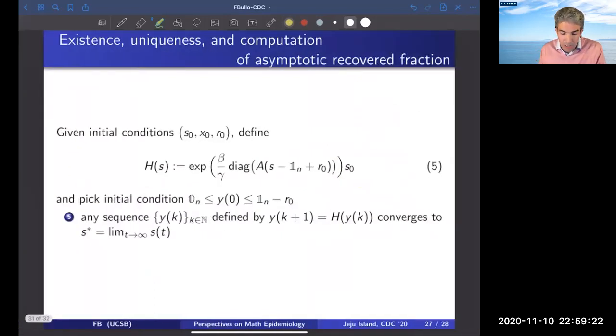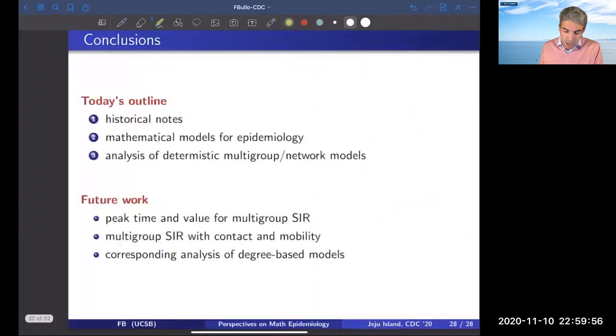Finally, we have been able to also provide an algorithm to compute the asymptotic recovered fraction. You know, what I was depicting with the symbol R infinity earlier, how many individuals have had to go through the infection. In order to compute that, we are proposing an iteration that is monotonically converging, is guaranteed to compute from appropriate initial conditions to compute this final value of individuals that remain susceptible. One minus that is equal to the number of individuals who have received the infection.